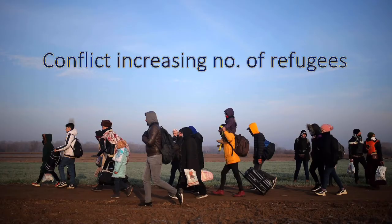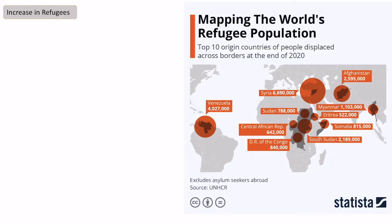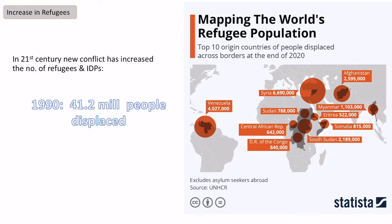The last area I'm going to cover is how conflict has led to more refugees. In the 21st century we've seen a big increase in the number of refugees and internally displaced people. Major refugee populations have come from conflict in Syria, South Sudan, Afghanistan, as well as political issues in Venezuela and the DRC. In the 1990s there were around 41.2 million displaced refugees or IDPs, but by 2020 that number had doubled to 82.4 million.